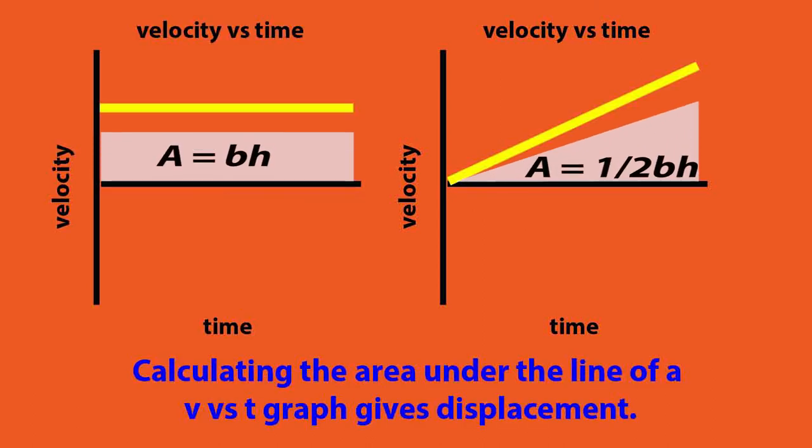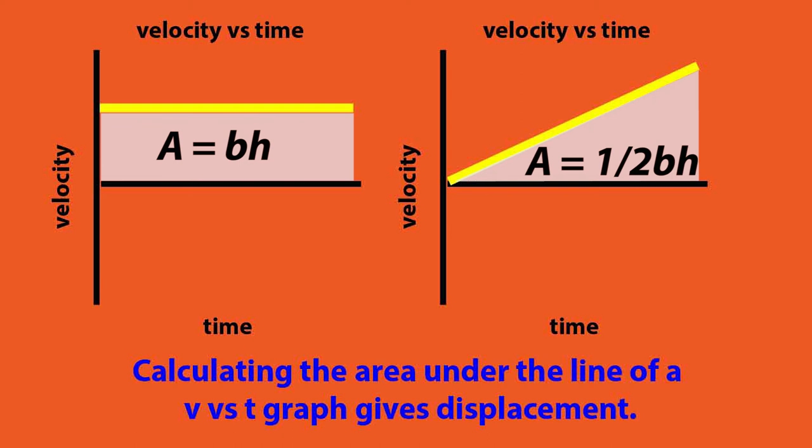Now, two other things you've got to know is you can find the displacement under a velocity time graph. All you've got to do is find the area. That's base times height if it makes a rectangle, one half base times height if it makes a triangle.